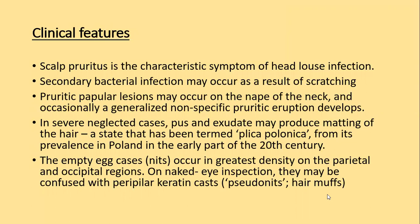Clinical features: scalp pruritus is the characteristic symptom of head louse infection. Secondary bacterial infection may occur as a result of scratching. Pruritic papular lesions may occur on the nape of the neck that can occasionally generalize. In severe and neglected cases, pus and exudate may produce matting of the hairs — a state termed plica polonica, from its prevalence in Poland in the early part of the 20th century.